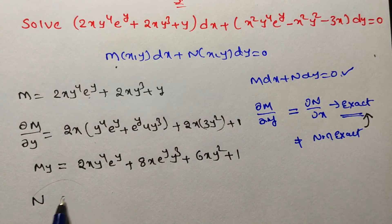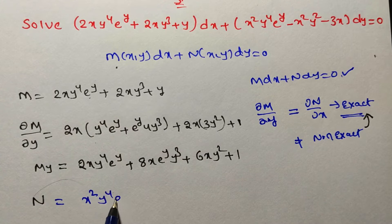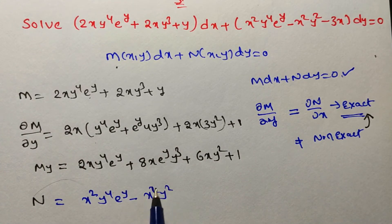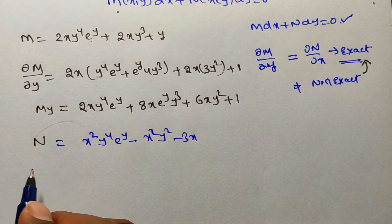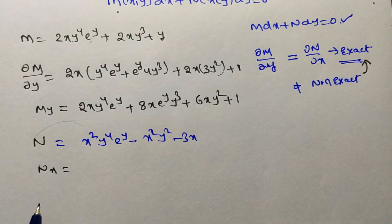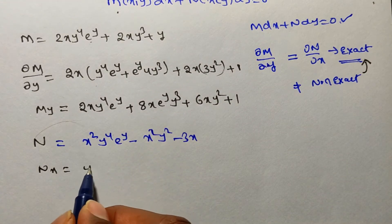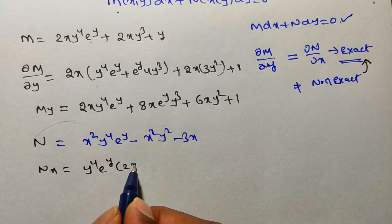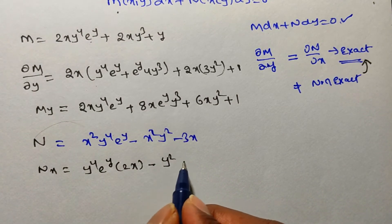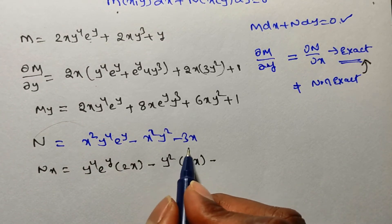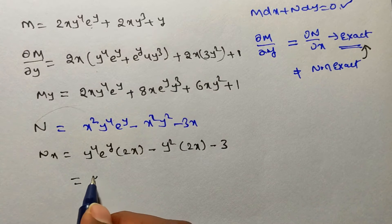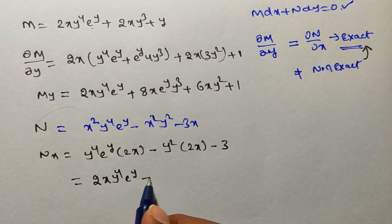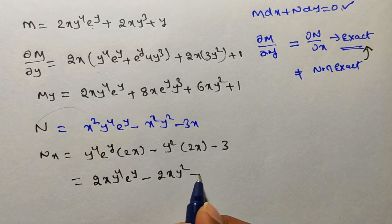Now we write N = x²y⁴eʸ − x²y² − 3x. We find ∂N/∂x: treating y terms as constants, x² derivative is 2x, so we get 2xy⁴eʸ − 2xy² − 3. This is ∂N/∂x.